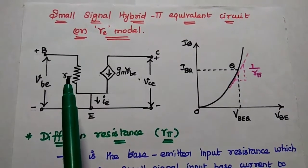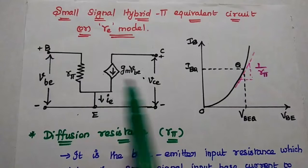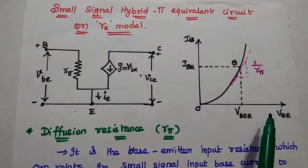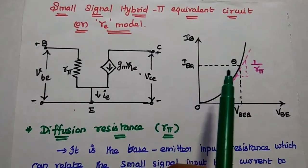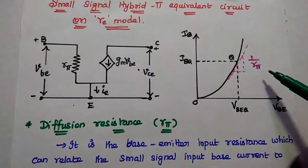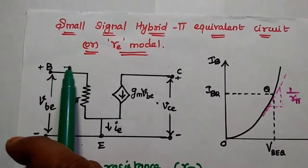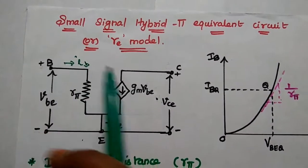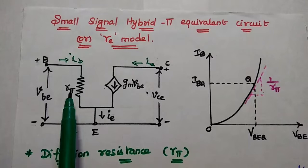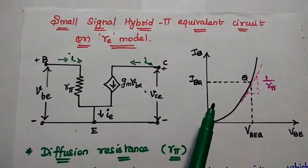R_pi relates the small signal input base current to the small signal input voltage. For this small signal analysis, we consider the input characteristics, that is I_B versus V_BE, and take the Q point values I_BQ and V_BEQ. The slope of this characteristic is given as 1/R_pi. The small signal base current is represented as small i_B, and the output current is small i_C. According to Ohm's law, R_pi equals V_BE divided by I_B, and I_B can be calculated from the characteristics curve.